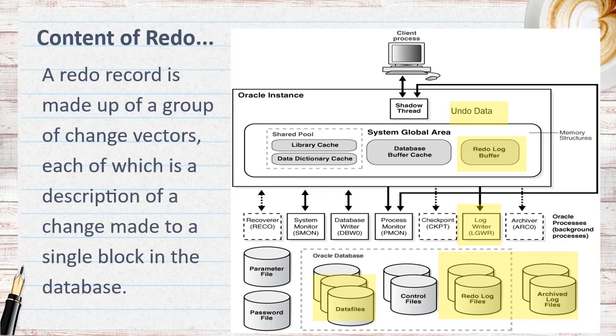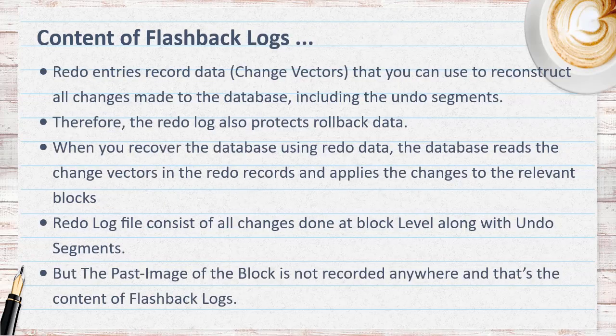As per Oracle documentation, the redo log files are filled with redo records. A redo record, also called a redo entry, is made up of a group of change vectors, each of which is a description of a change made to a single block in the database. The redo entries record data that you can use to reconstruct all changes made to the database, including the undo segments. Therefore, the redo log also protects the rollback data. When you recover the database using the redo data, the database reads the change vectors in the redo records and applies the changes to the relevant blocks to make it current until the SCN. The redo log consists of all changes done at the block level along with undo segments.